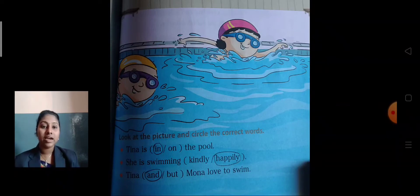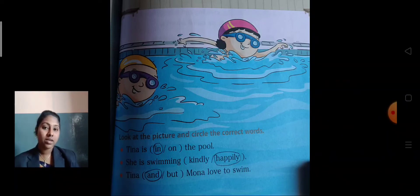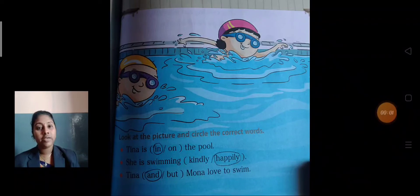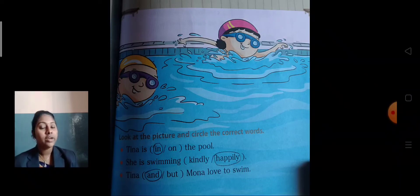Third one: Tina — and or but — Mona love to swim. The answer is 'and'. Tina and Mona love to swim. The names of those girls are Tina and Mona, and they love to swim.